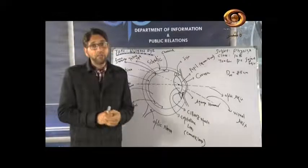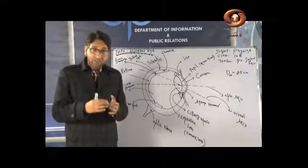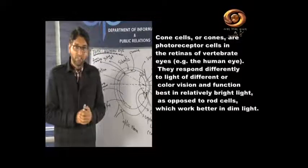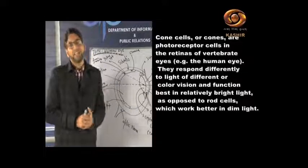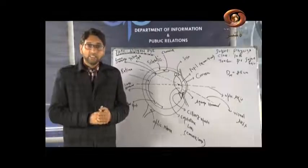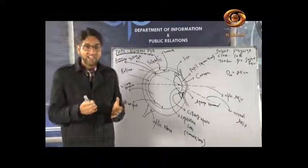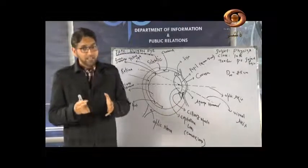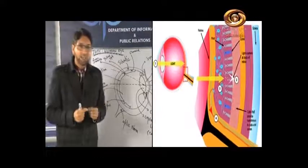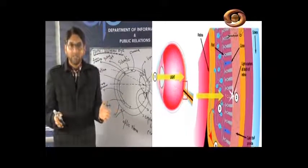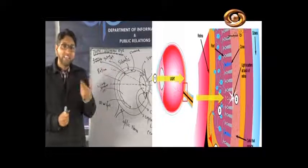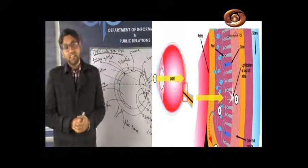Most of the cone cells and rod cells are clustered together in a depression in the retina called the fovea centralis. This depression is called the yellow spot. Yellow is considered the mean or average light in the visible spectrum, which is why it is named the yellow spot. This region is responsible for both brightness detection and color vision.